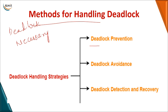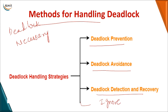We can go for deadlock prevention, deadlock avoidance, deadlock detection and recovery, and we have another option where you can just go for ignoring a deadlock — you pretend as if the deadlock has not occurred. Ignoring is generally the worst-case option that is used.